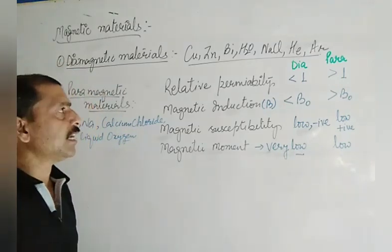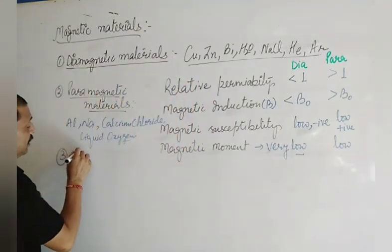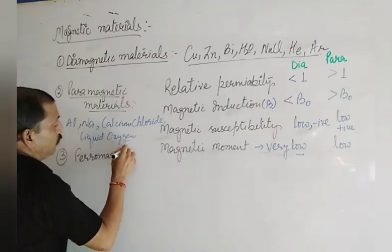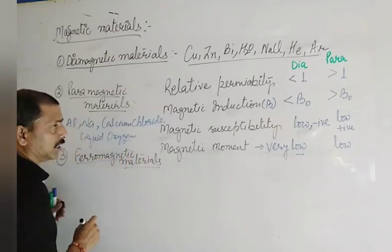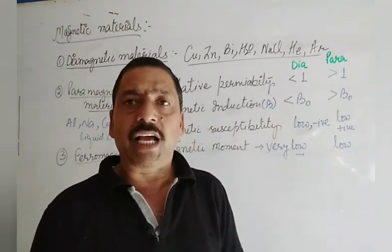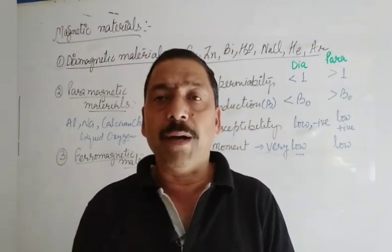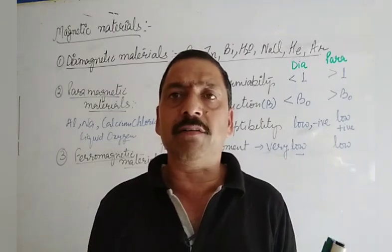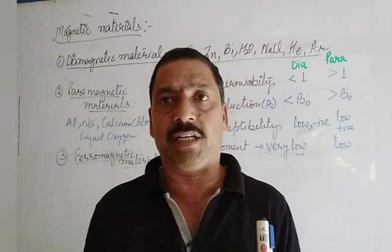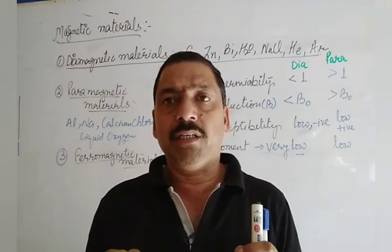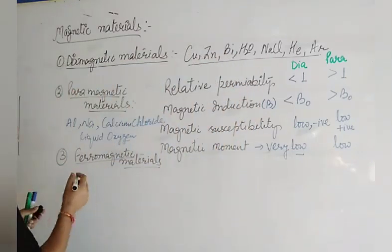Number three are ferromagnetic materials. Ferromagnetic materials are those which are very strongly magnetized in the direction of the magnetic field. These are magnetic materials which, when placed in a magnetic field, align themselves in the direction of the magnetic field but strongly. Such types of materials are called ferromagnetic materials.